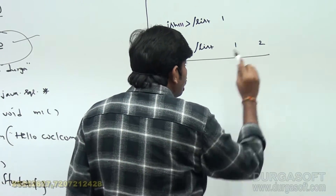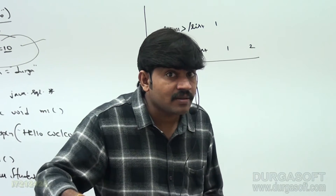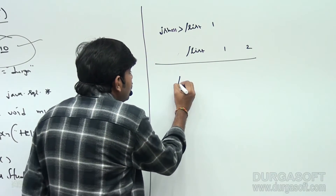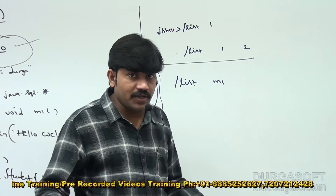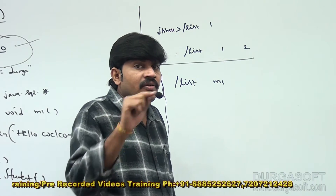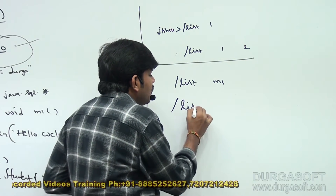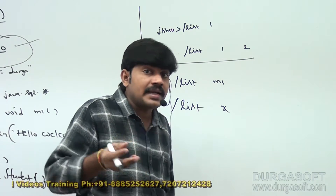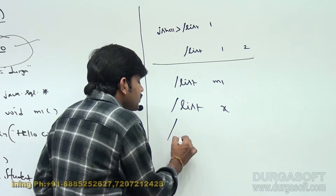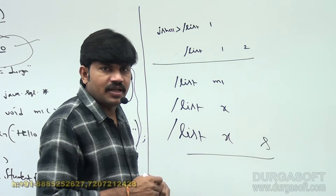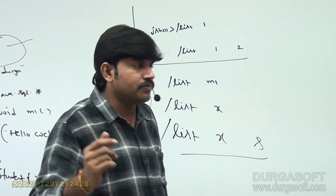We can also list out snippets based on name. For example, I have an m1 method. Can you please list out the m1 method declaration? Using slash list m1, automatically the m1 method declaration snippet will be displayed. There is also a variable declared named x. To list out the snippet named x, use slash list x. I also declared a string variable named y.